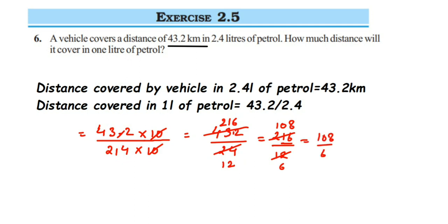Cancel this directly in the 6 times table — you can cancel in the 2 and 3 table if you want, or directly in 6. 6 ones are 6 and here 6 ones are 6, so 4 is the remainder, making 48. 6 eights are 48. So this is equal to 18. In 1 liter of petrol, the vehicle will cover 18 kilometers. I hope this question is clear. If you have any question or doubt, you can drop a comment. Thank you so much for watching.